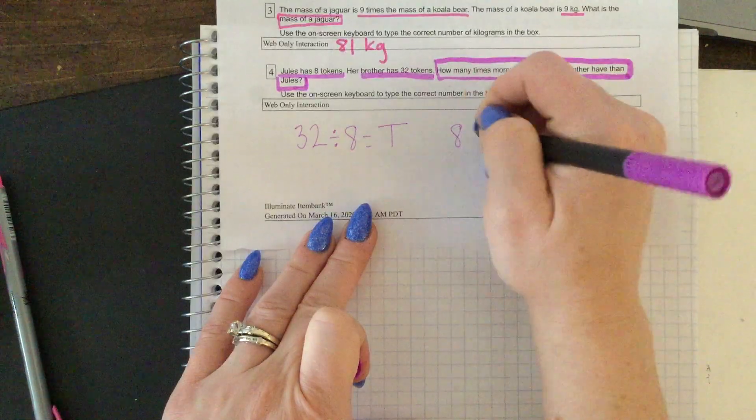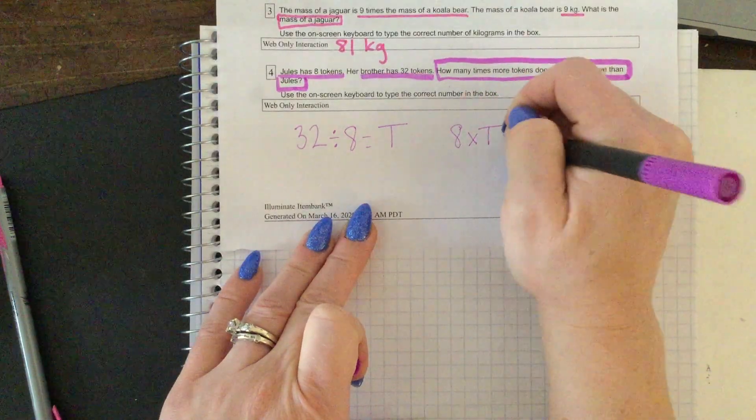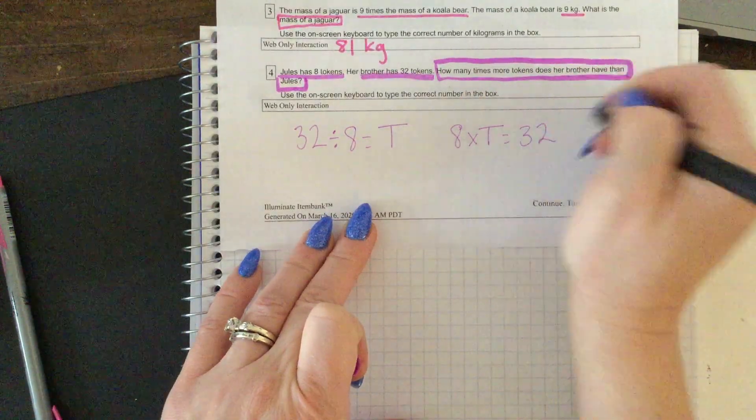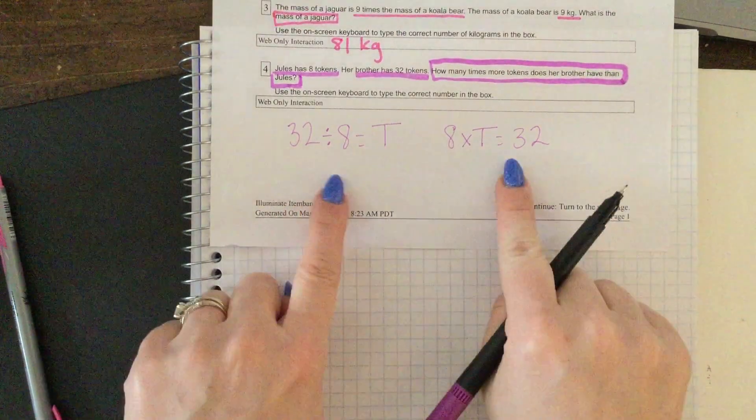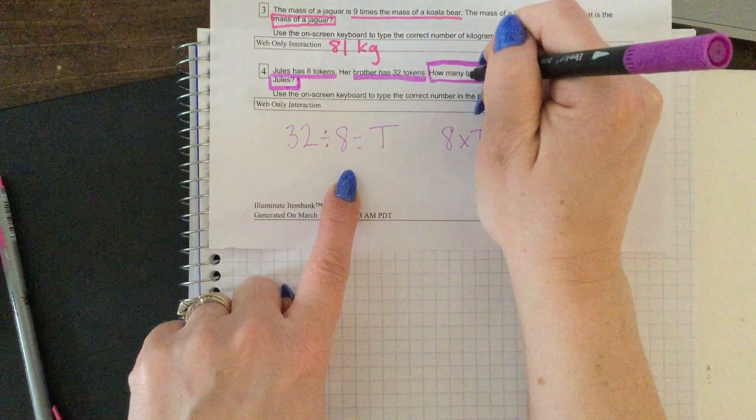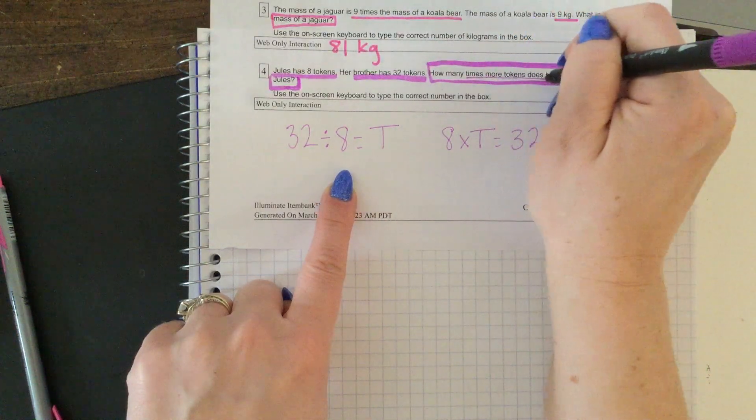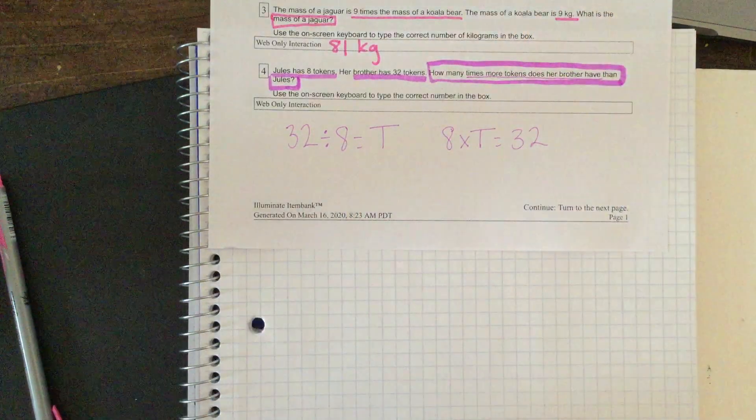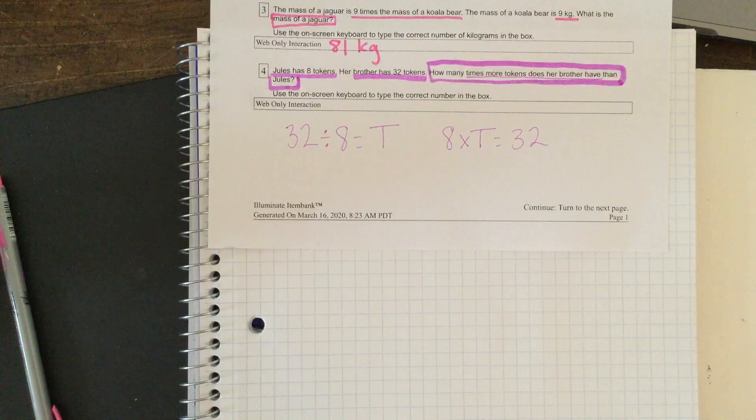Or we could say 8 times T equals 32. Either one of these are gonna help you figure out how many times more tokens does her brother have. So I'm gonna give you a second, pause and come on back.